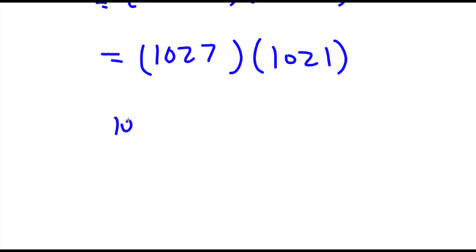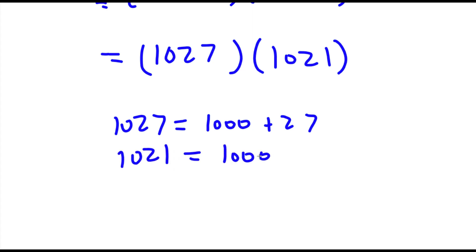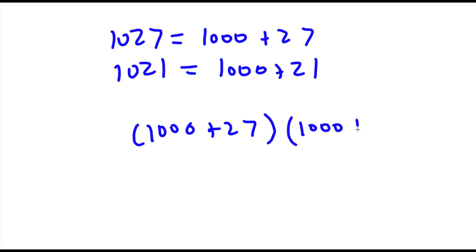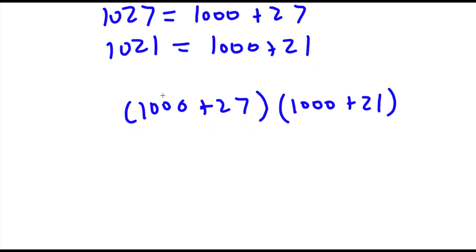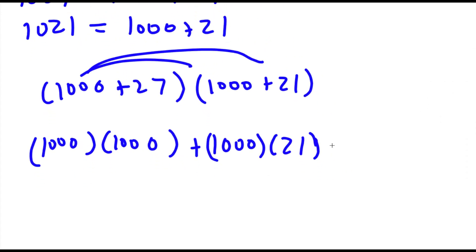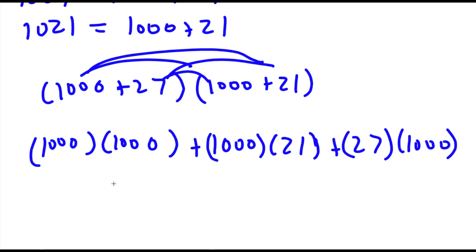Now, 1,027 is equal to 1,000 plus 27, and 1,021 is equal to 1,000 plus 21. So substituting these values in, I get 1,000 plus 27 times 1,000 plus 21. To solve this I need to distribute. I distribute the 1,000: 1,000 times 1,000 plus 1,000 times 21, and then I distribute the 27: 27 times 1,000 plus 27 times 21.